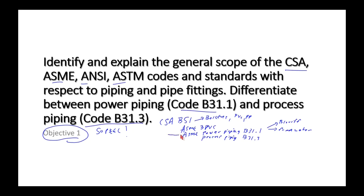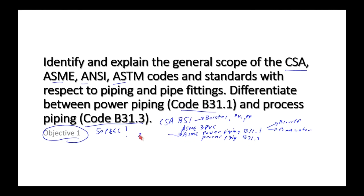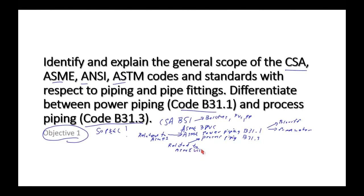You could relate power piping to ASME Section I, because it's really about boilers and high-pressure steam piping. Similarly, the process piping code is kind of related to ASME Section VIII — pressure vessels. These are crude comparisons, but the process piping code covers all kinds of pressurized fluids other than steam.